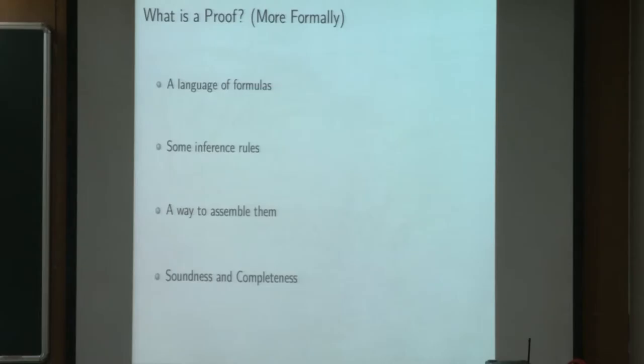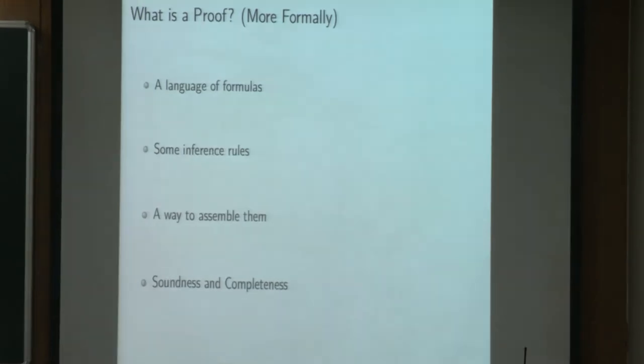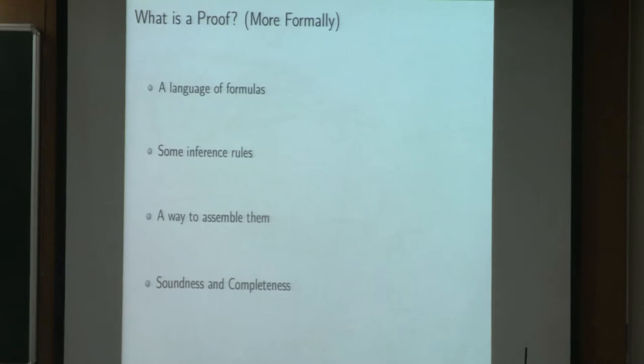Formally, the key ingredient to have a proof is we need to have some language that describes our formulas, some inference or deduction rules, a way to assemble them in order to have a full proof at the end. And we want about our proof system to have some property of soundness and completeness in order to link it with semantic.